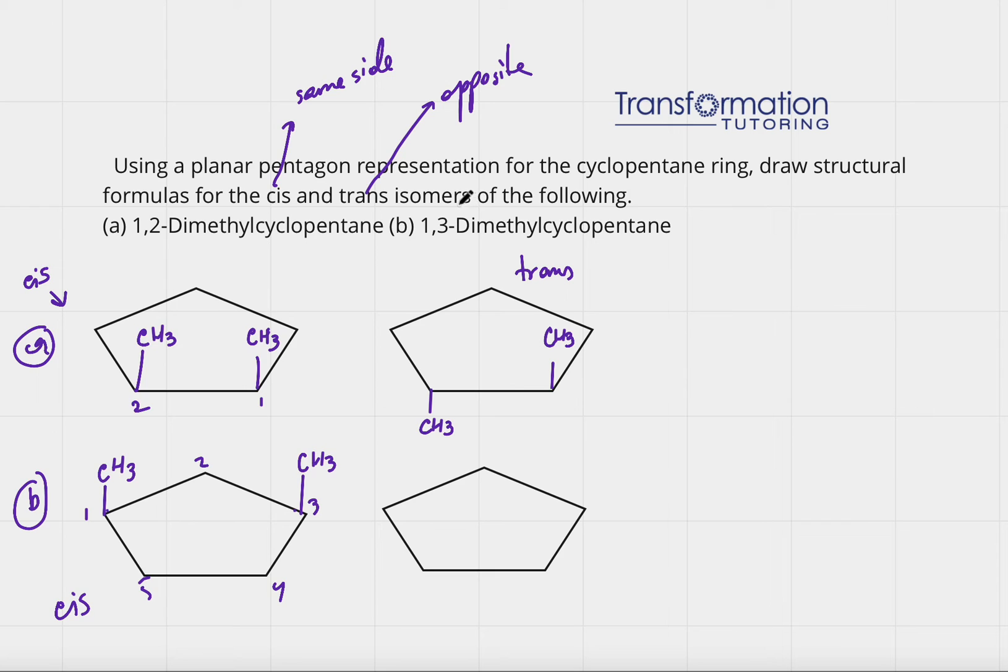Now let's draw trans, which is the opposite. One will be up and one methyl group will be down. And this would be trans isomer of 1,3-dimethylcyclopentane.